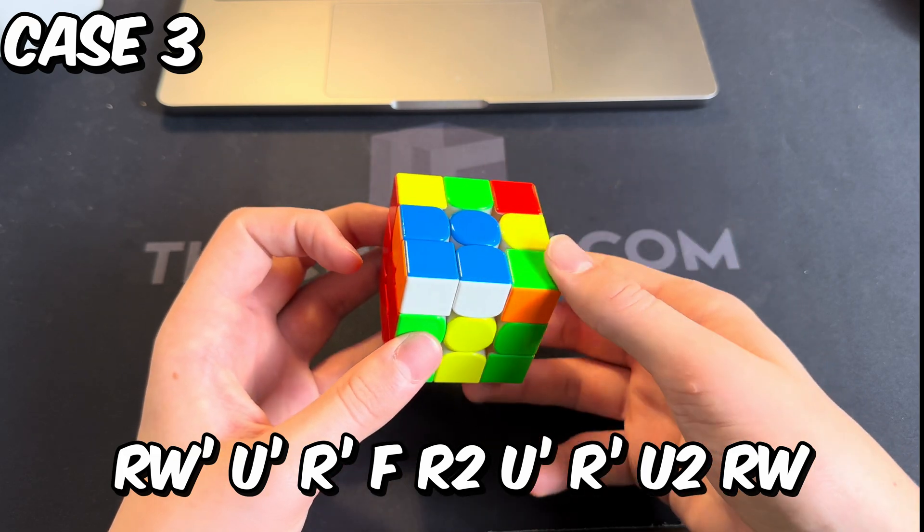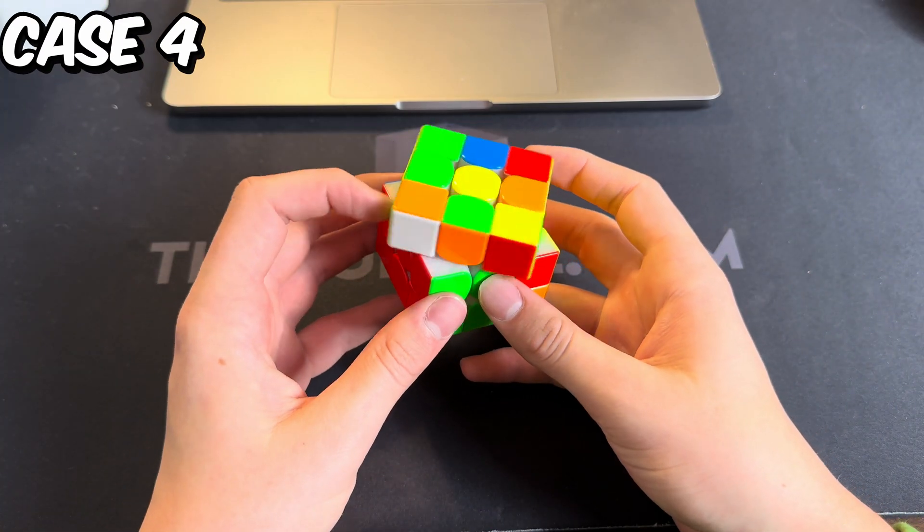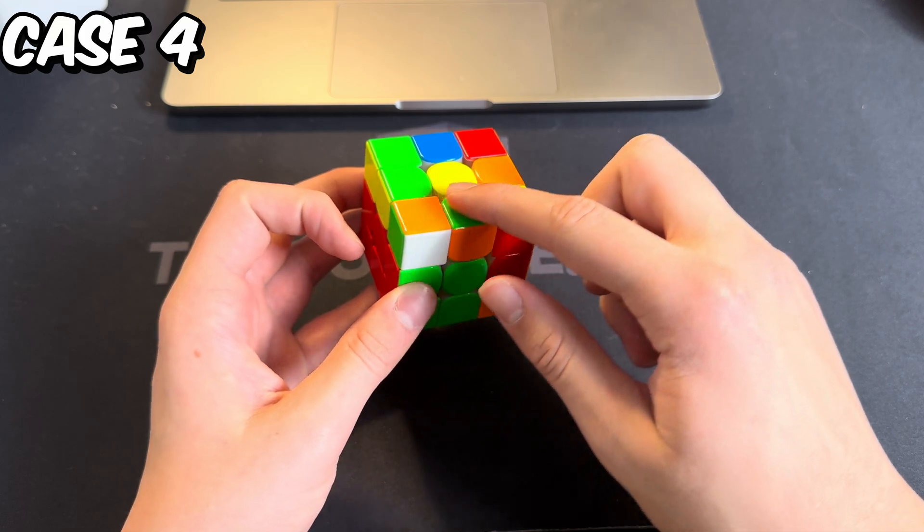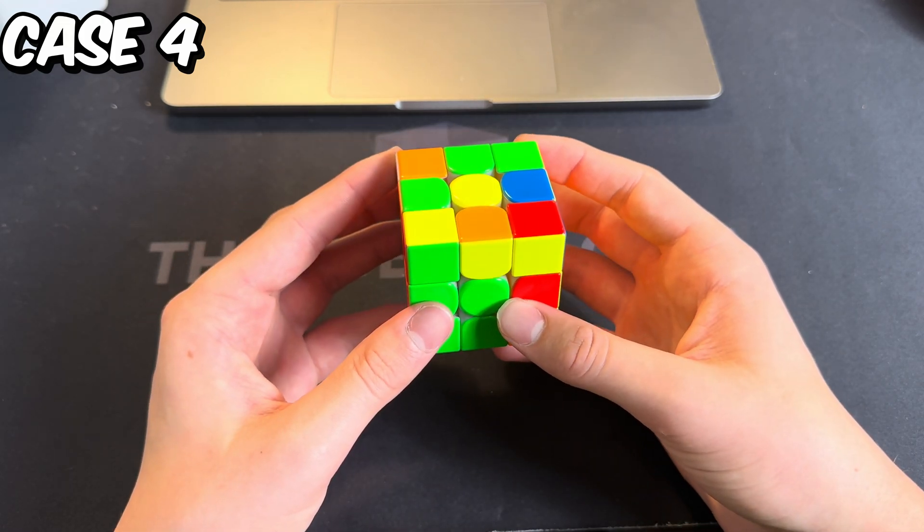For this case where you have white in the front but they don't match on top, you hold it over here and the algorithm goes like this.